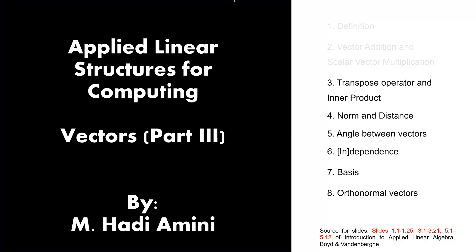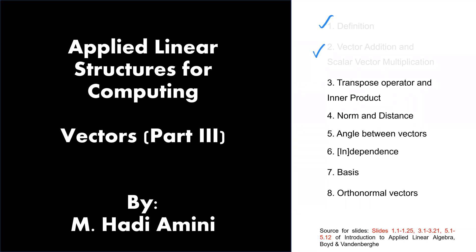In the previous two parts of vectors, first we talked about definitions of vectors, how we represent a vector, and some specific types of vectors. Then we talked about vector addition as well as scalar-vector multiplication, some of their properties, and the geometric representation of each concept. Now we are going to talk about the transpose operator and inner product. This is part three of vectors.